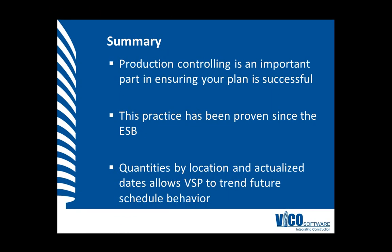In this vignette, you've learned that production controlling is an important part to ensuring your plan is successful. We've also learned that this practice has been proven since the Empire State Building, and we know that quantities by location and actualized dates allows Vico Schedule Planner to trend future schedule behavior, so we can be proactive with responding to potential alarms.